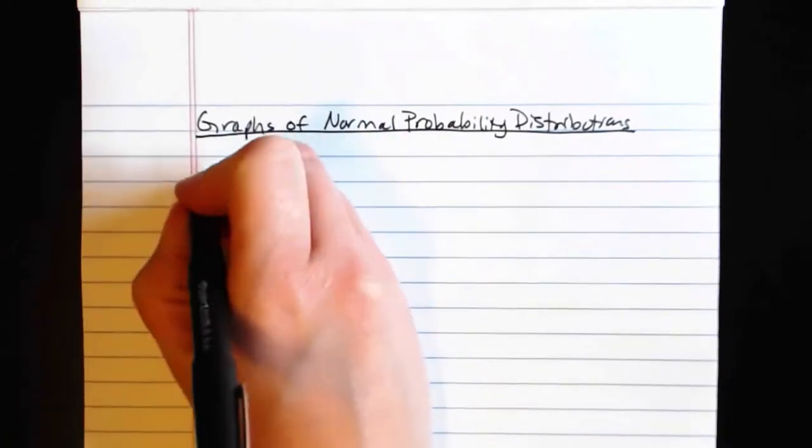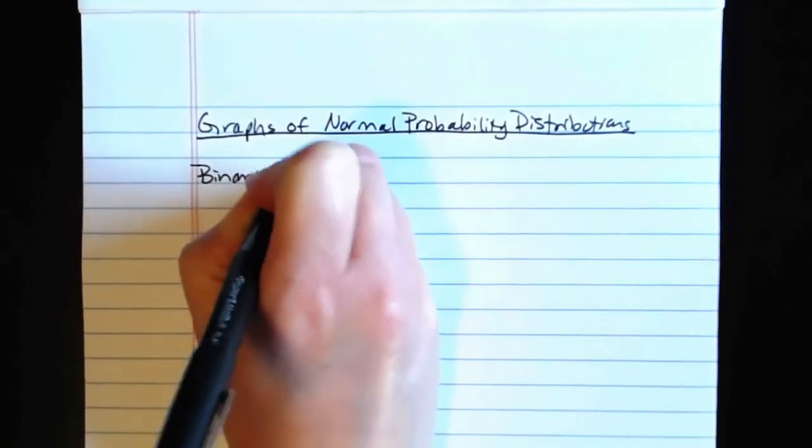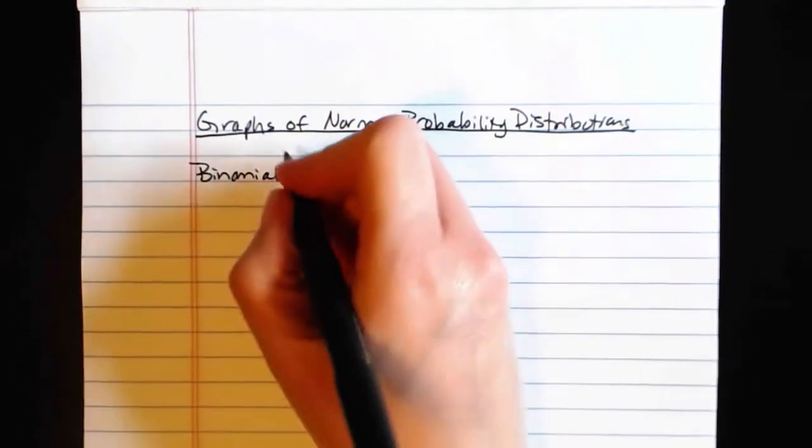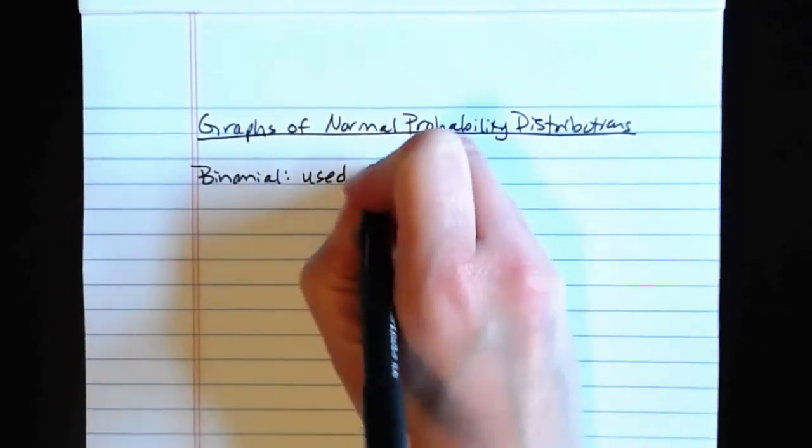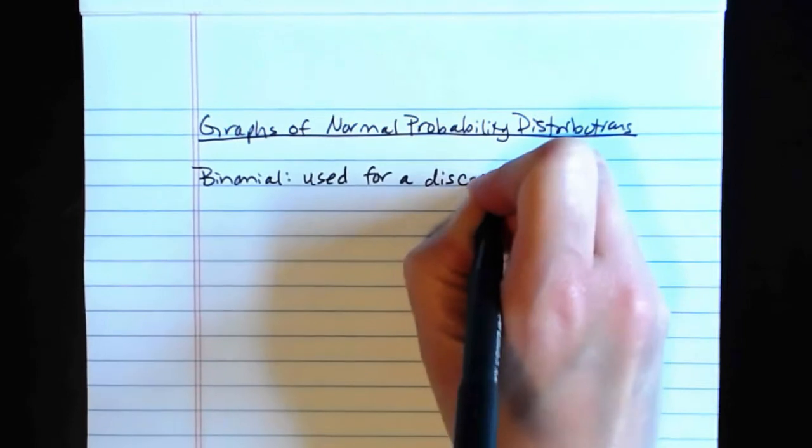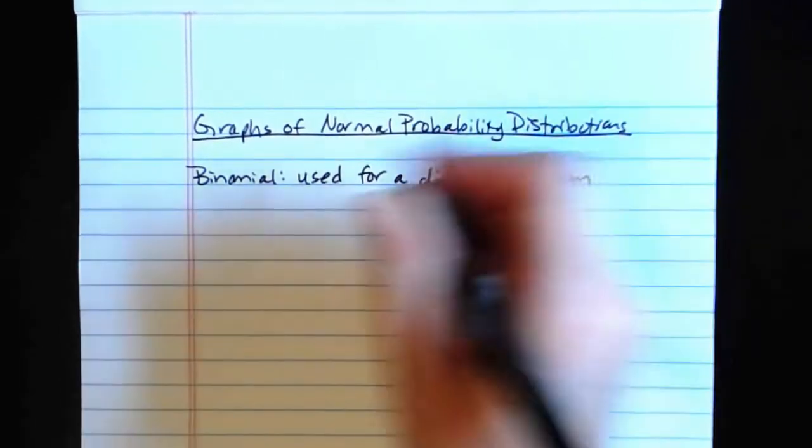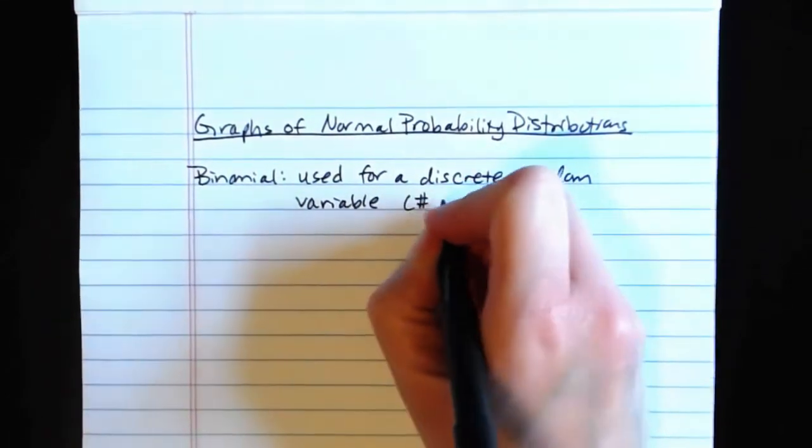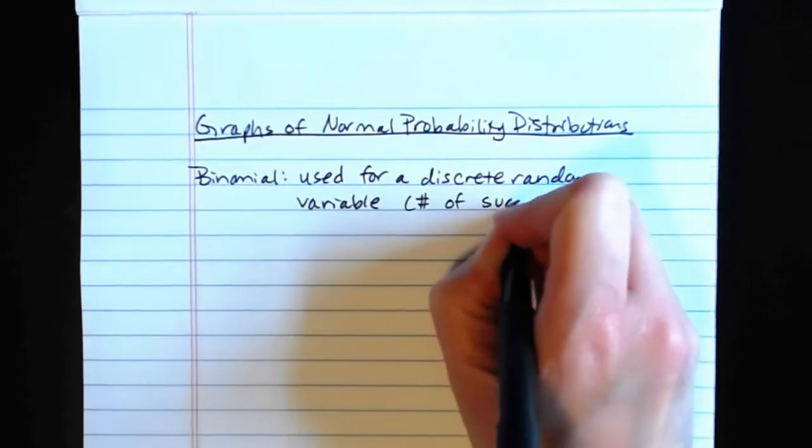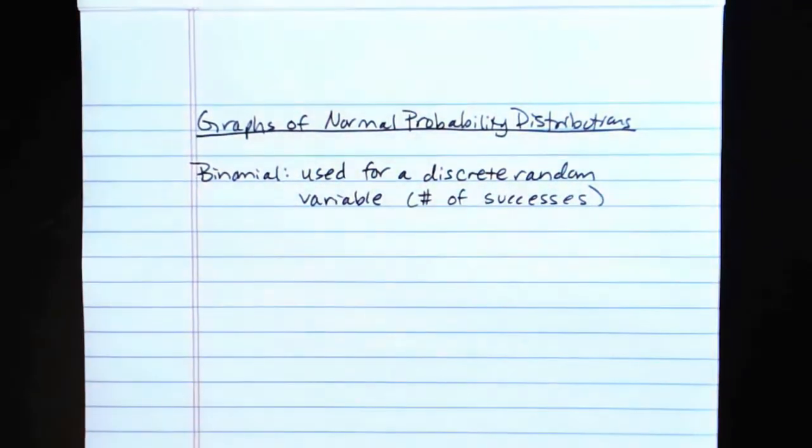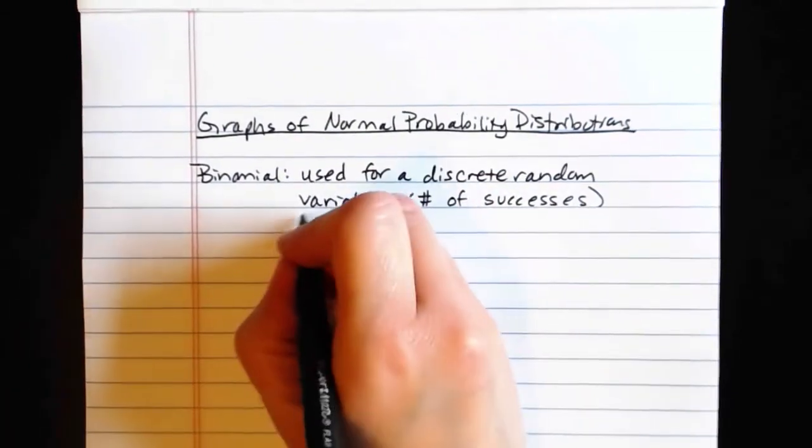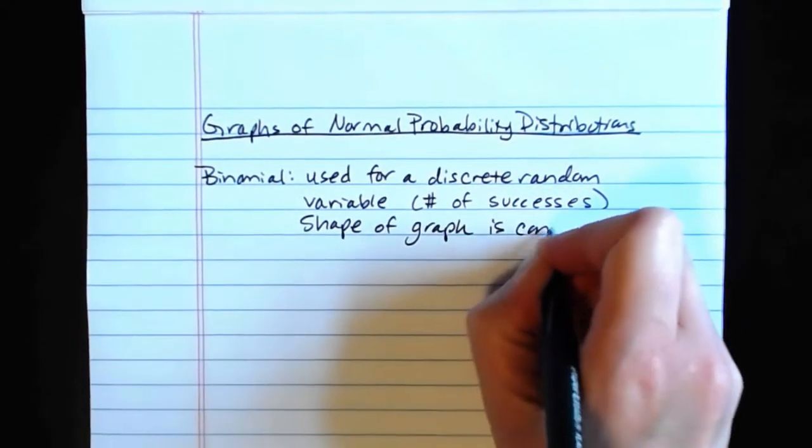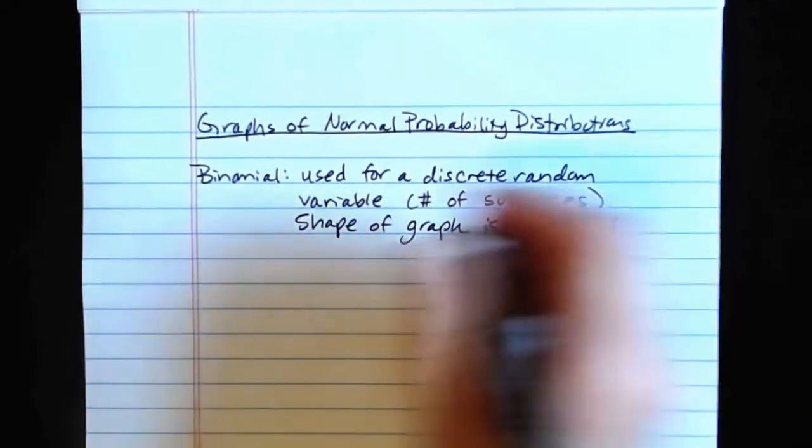The binomial probability distribution is used for a binomial random variable, which by definition is a discrete random variable. It's used for a discrete random variable, specifically the number of successes in n trials.